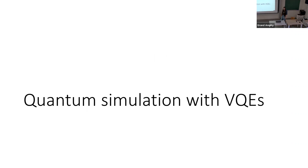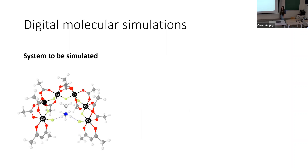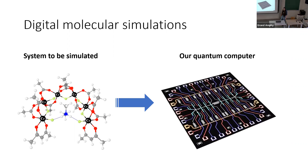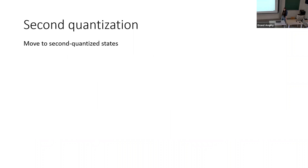First, a bit about quantum simulation with VQEs. How do we actually simulate molecular systems on a quantum computer? At first glance, this isn't necessarily obvious. The system to be simulated is some electronic state in some continuous infinite space, while the system we want to represent it on is a quantum computer — for instance, a superconducting chip consisting of qubits on which we perform gates.